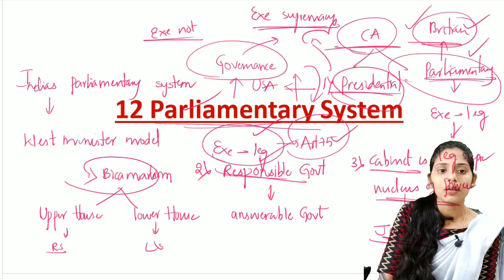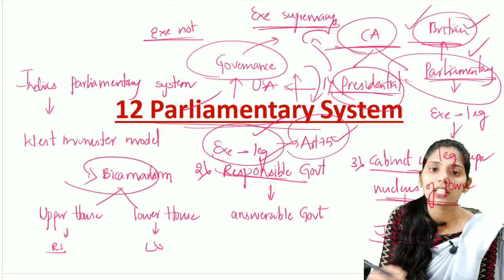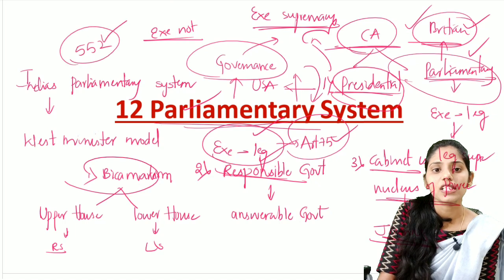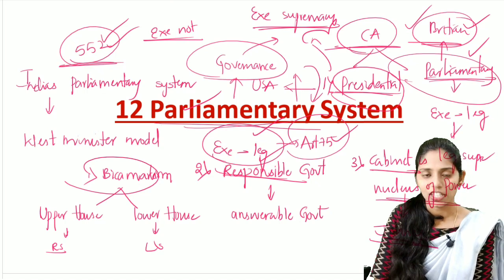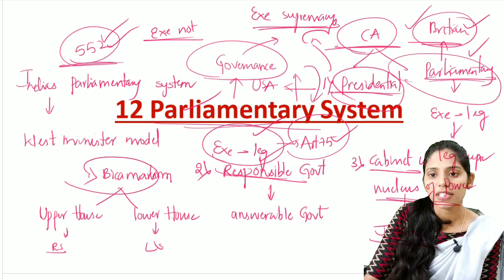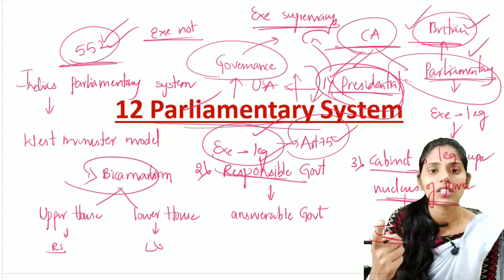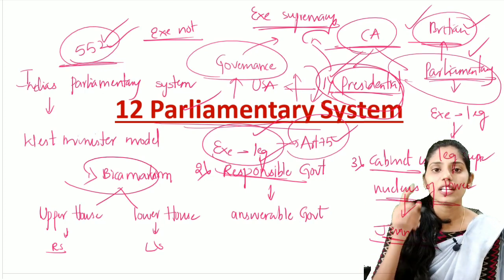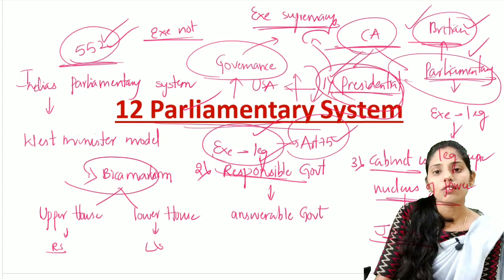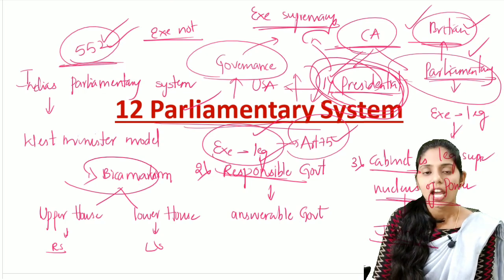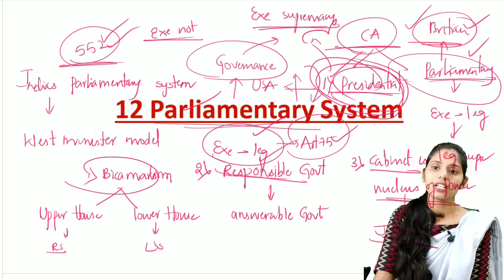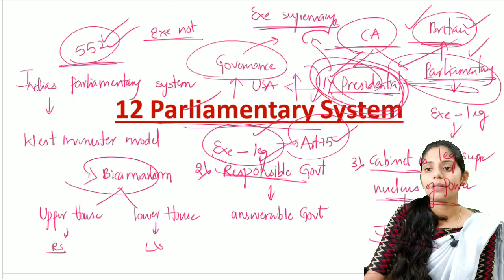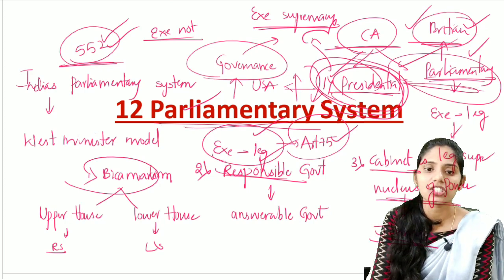In the Constituent Assembly, after discussions and debates, they adopted the parliamentary system of democracy. The reason was that at the time of the newly independent country, there was the problem of integrating the princely states — about 552 princely states had to be integrated. In the presidential form, the president is the head of state and head of government, concentrating authority in one person. The founding fathers thought it was not good to keep power in a single person, so they adopted the parliamentary system.